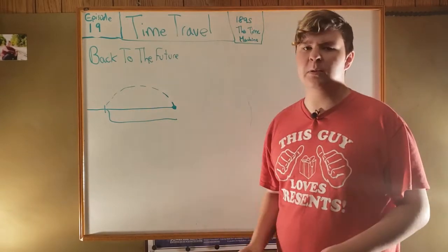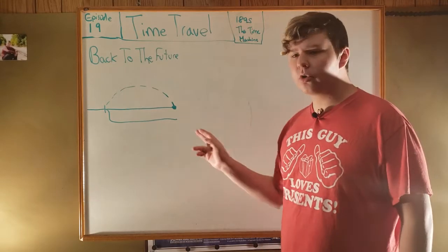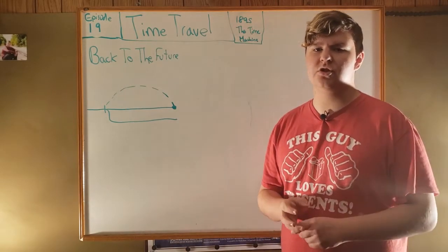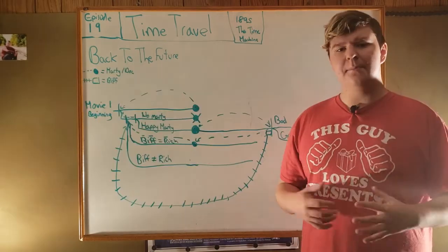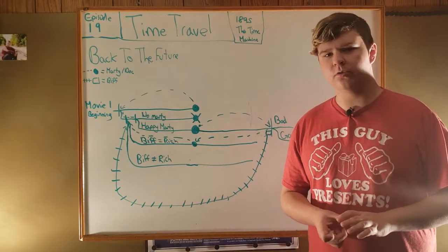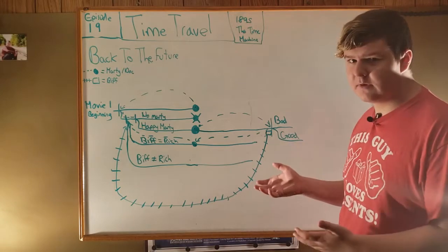For example, when Marty goes back in time and prevents his parents from meeting, it causes a new course of time where he and his siblings don't exist. Mapping out the first two movies is pretty hard with Back to the Future, but allow me to explain what all of this means.